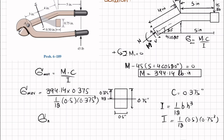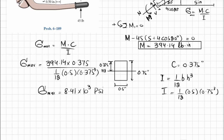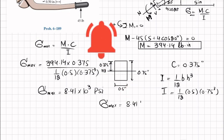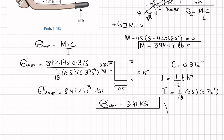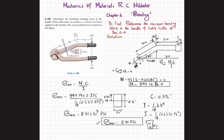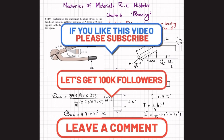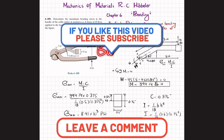Solving this gives maximum bending stress equal to 8.41 × 10³ psi, or in ksi, maximum bending stress equals 8.41 ksi. That is the answer — at section AA, the maximum bending stress is 8.41 ksi. This concludes problem 6-189.